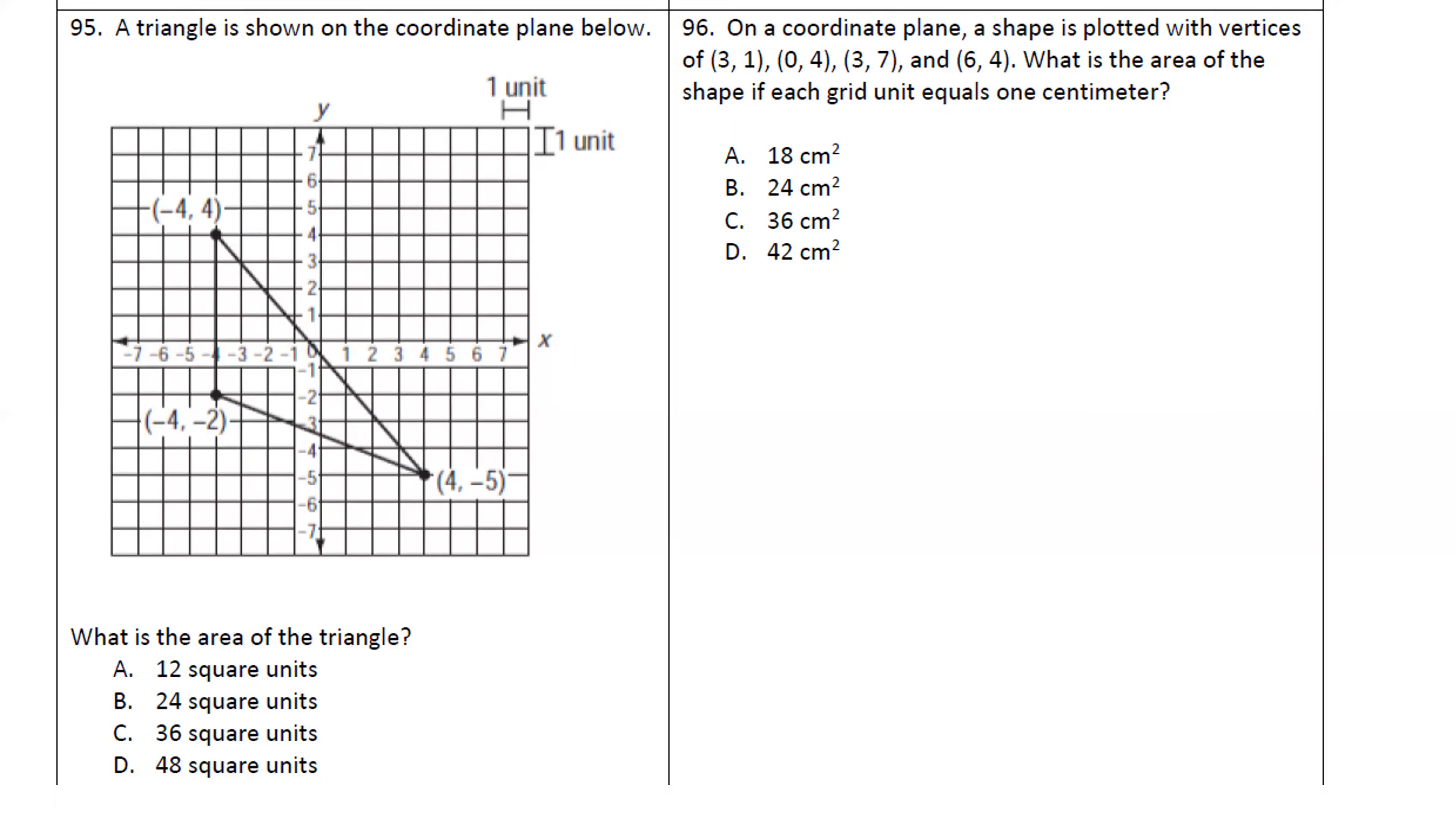So on here, area equals one half base times height. Well, what is the base and height of this triangle? It doesn't matter what side you use as a base, so pick the side that is vertical over here. The change vertically from negative two to positive four is six units. So that's going to be our base. Our height is, how many units does it change from here to there? Eight units. So we have a base of six, a height of eight.